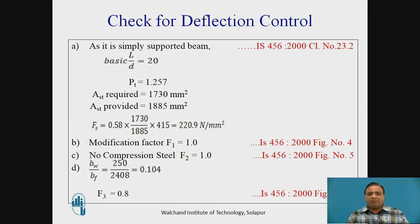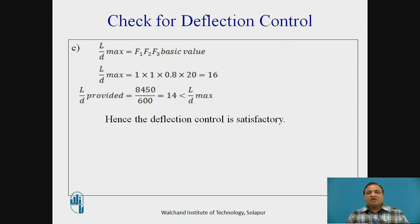As it is a simply supported beam, L/D is 20 as per clause number 23.2 of IS456. Percentage steel is 1.257. Ast required and Ast provided both are known: 1730 and 1885. Fs works out to be 220.9 and modification factor F1 is 1 from figure number 4, compression steel F2 will be 1, and factor F3 works out to be 0.8. Then L/D maximum equals F1 × F2 × F3 × basic value, which is less than 14, so it is less than maximum L/D provided.